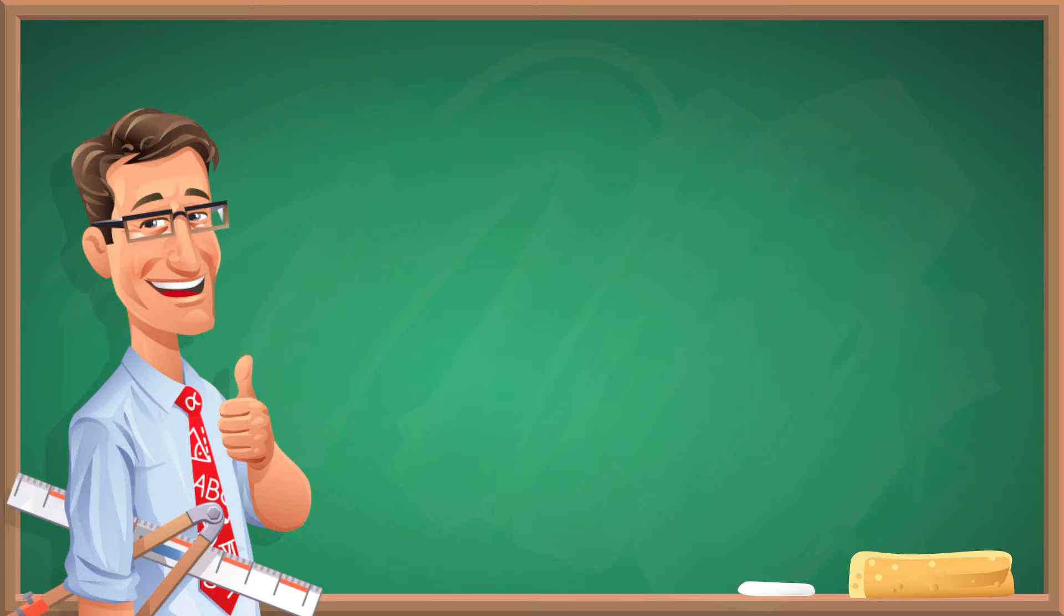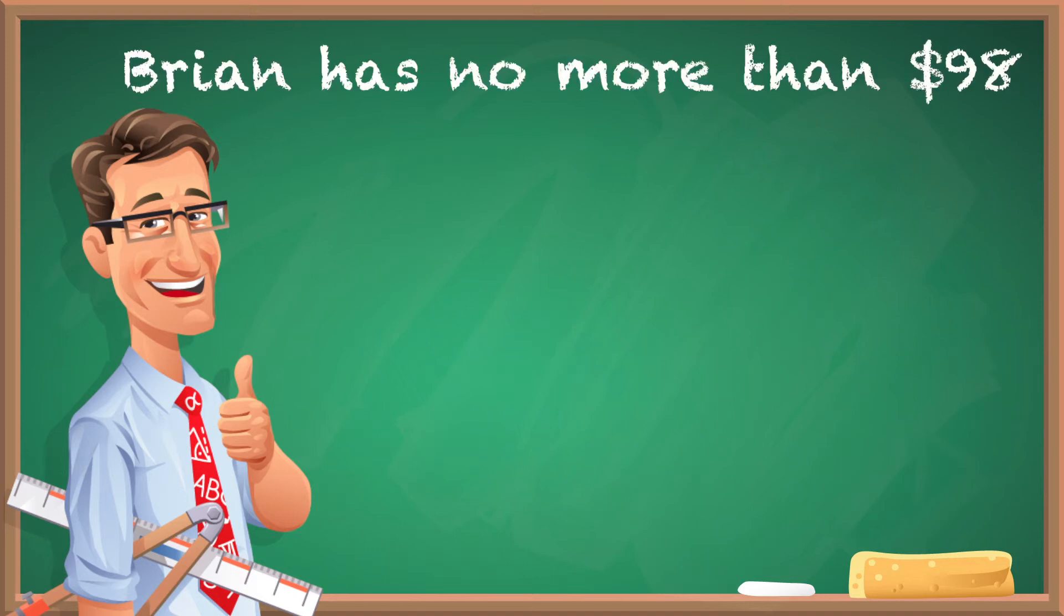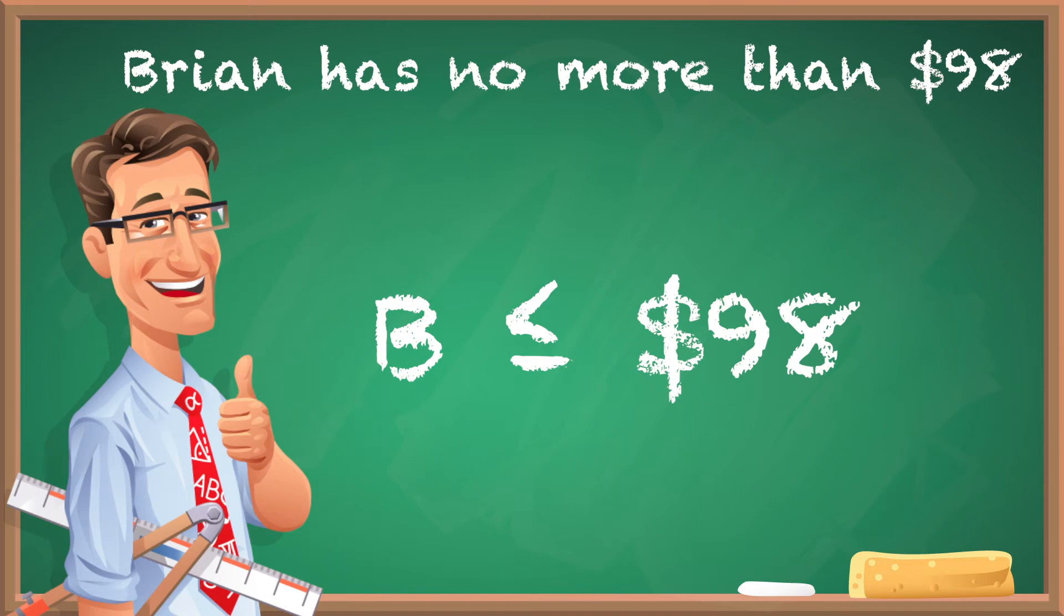If you see something that says no more than or at most, that means you're not gonna have any more than that. You're gonna have less than or equal to that amount. So if there's a phrase that says Brian has no more than 98 dollars, Brian has less than or equal to 98 dollars. You're gonna want to make sure that arrow is facing toward B or whatever letter you choose to represent that, so B less than or equal to 98.